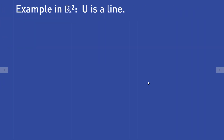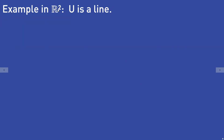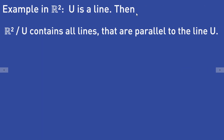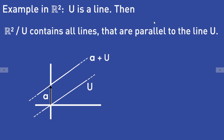In our R2 example, where U is a line, the quotient R2/U is the set that contains all lines in R2 that are parallel to the original line U — including the line a plus U and all other lines parallel to U.